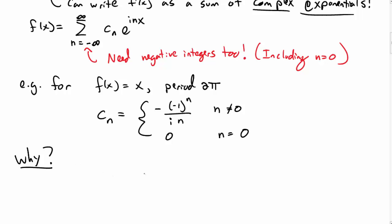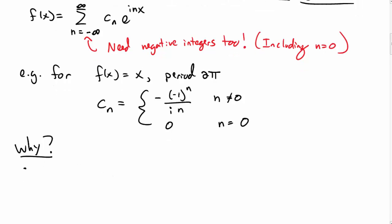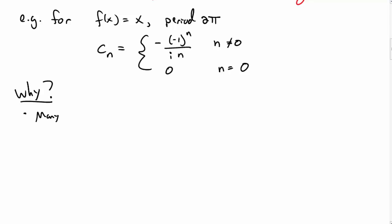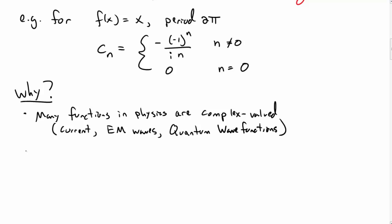Why would you ever want to write things in terms of complex exponentials? Well, there's a couple reasons. One is many functions in physics are actually complex. Namely, they use complex numbers. So this could be, say, current if you study current in electricity. Electromagnetic waves are easily represented in complex notation.